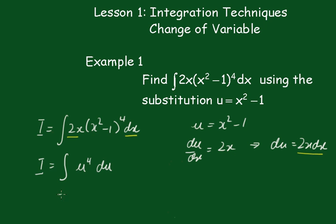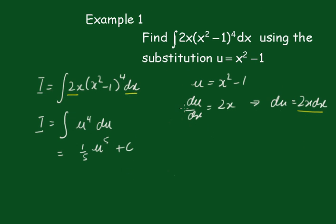And when you integrate that you get 1/5 u⁵ plus a constant. And now replacing the u with x² - 1 we get the final answer of (x² - 1)⁵/5 plus a constant.